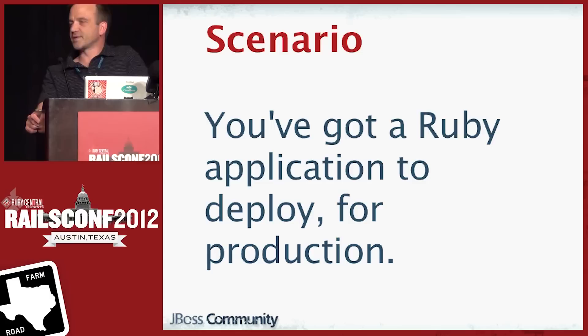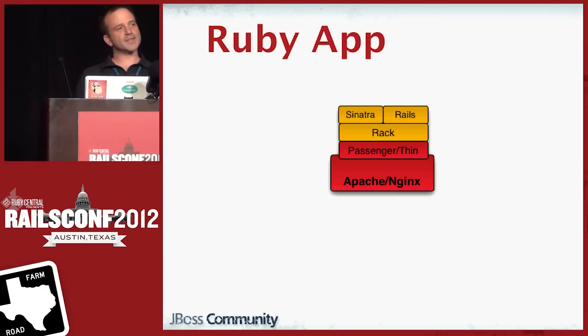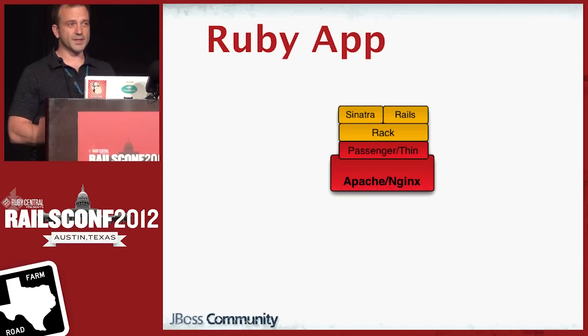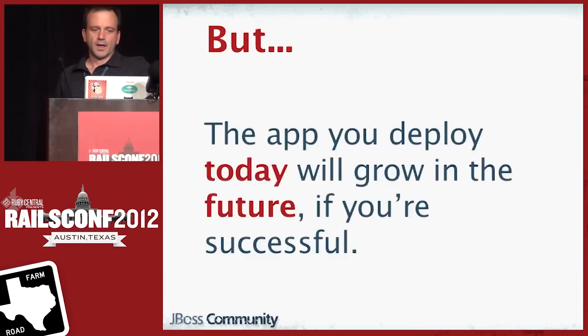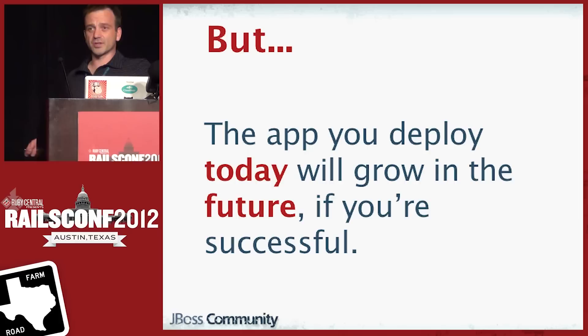Let's look at this scenario — one everyone in this room has probably had some experience with. You've got a Ruby application and you've got to deploy it into production. Since this is RailsConf, we'll call it a Rails app. At its most basic, that's a web server accepting HTTP requests and proxying them off to your application — something like Apache and Passenger. But that's a really simple picture, and it may be that your application, when you deploy it today, looks like that.